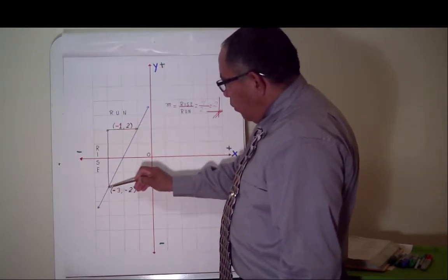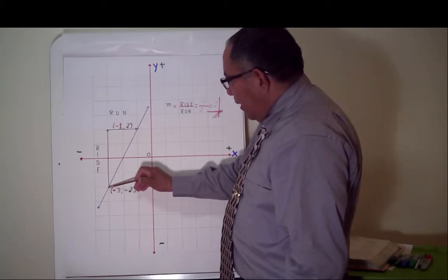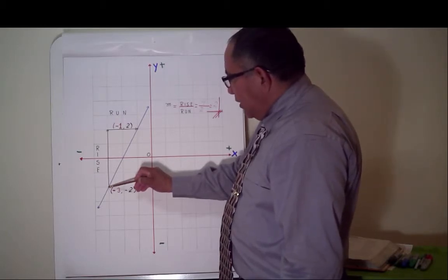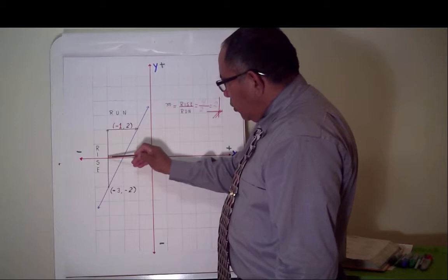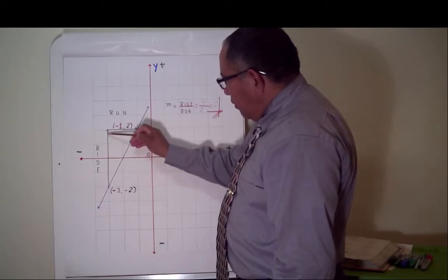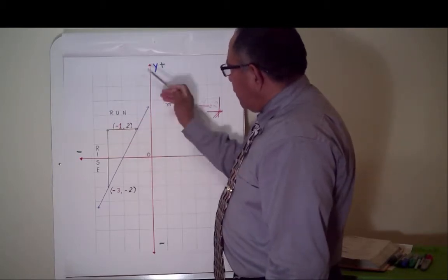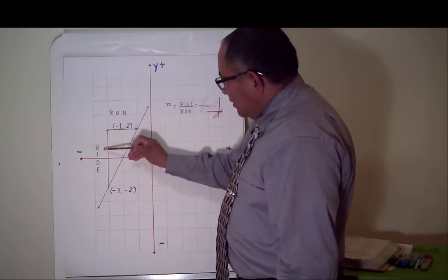Now, we have to count how many space. One, two, three, four. Four spaces. This is the rise.